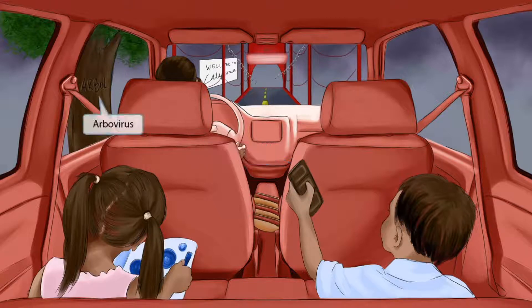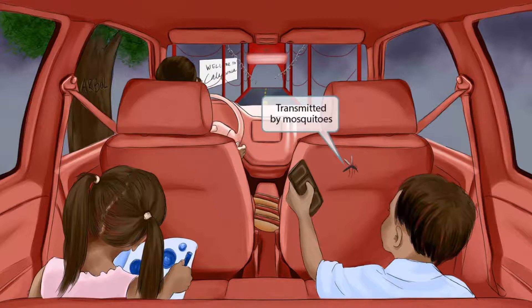If you look outside, you can see a tree to the left which says 'Arbol.' This is our symbol for arboviruses, and is here to help you remember that California encephalitis is an arbovirus. More specifically, it's transmitted by mosquitoes. Notice that we've shown a pesky mosquito inside of the car that's about to bite this little boy.